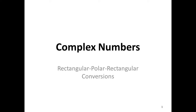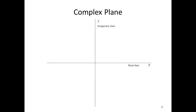In a rectangular coordinate system, the development begins with the two-dimensional rectangular coordinate system shown. The two axes are labeled as x and y. In complex variable theory, the x-axis is called the real axis and the y-axis is called the imaginary axis.